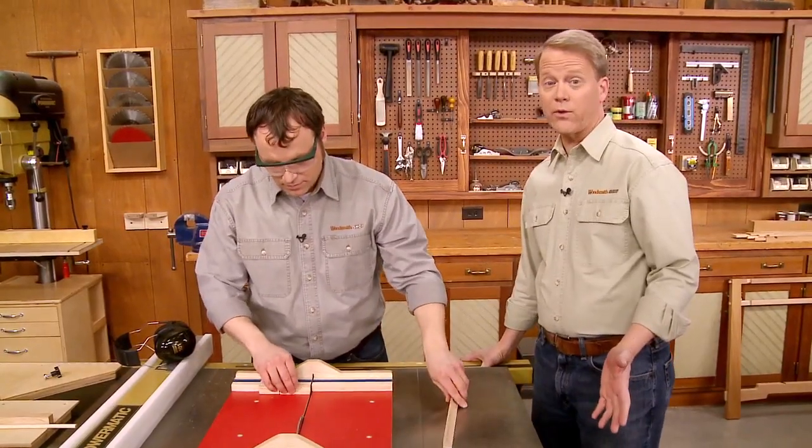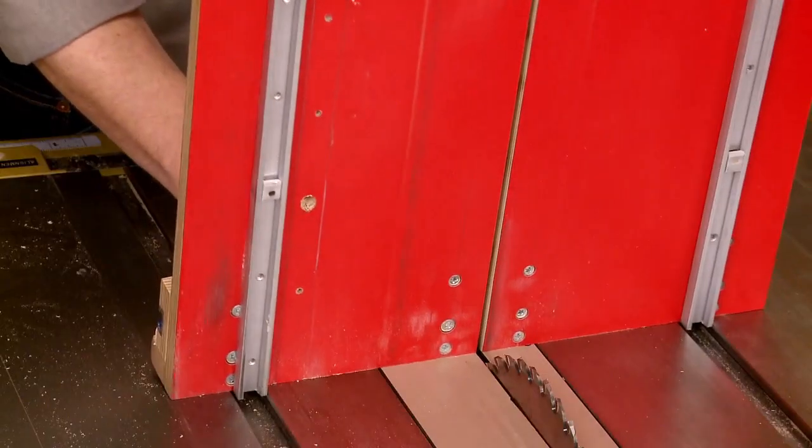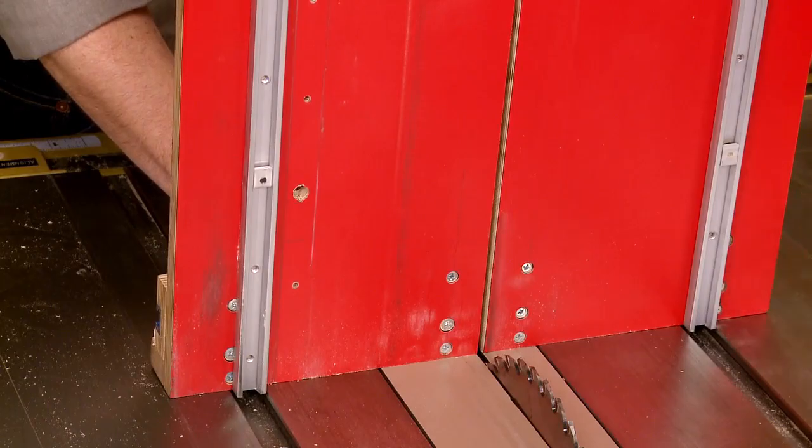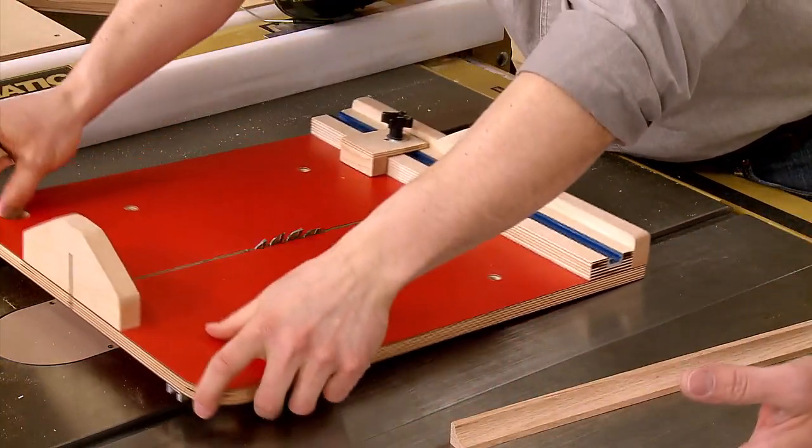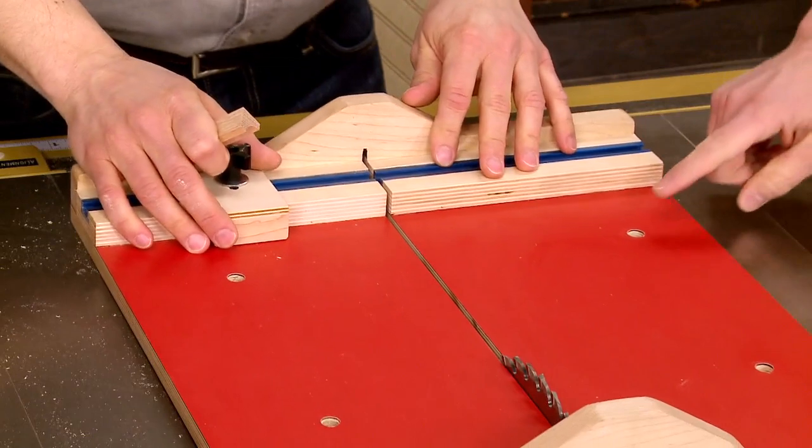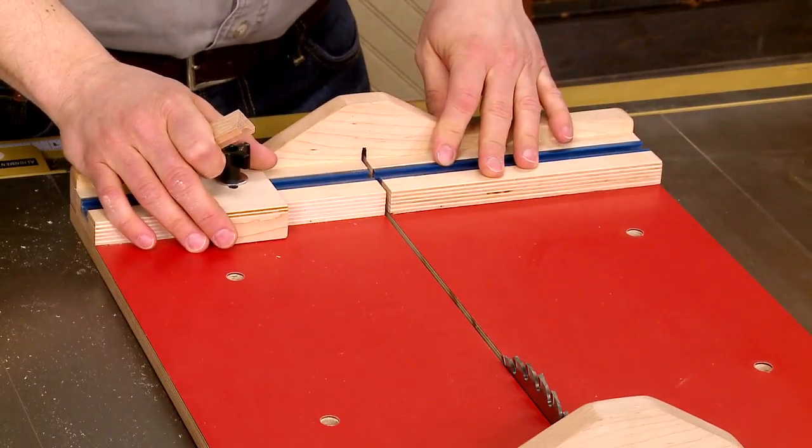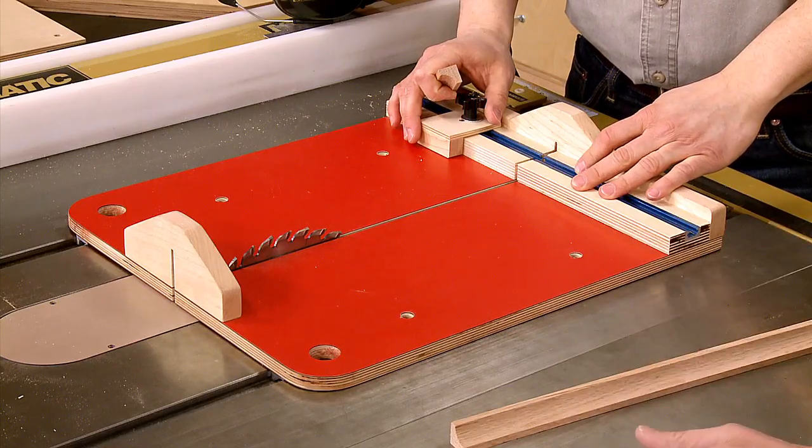Of course, you want to guide it accurately. So on the bottom of the sled, we've got a pair of metal runners that actually fit the miter slots in your saw. You want a smooth sliding fit, so on the top, we drilled a pair of holes that allow us to fine-tune the fit so everything slides nice and smooth.